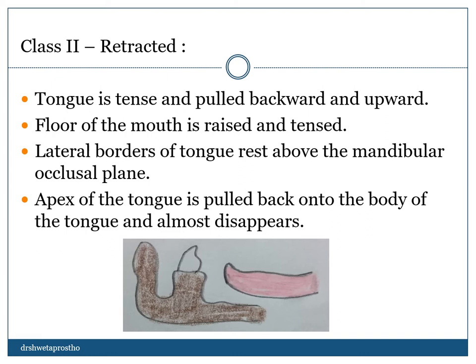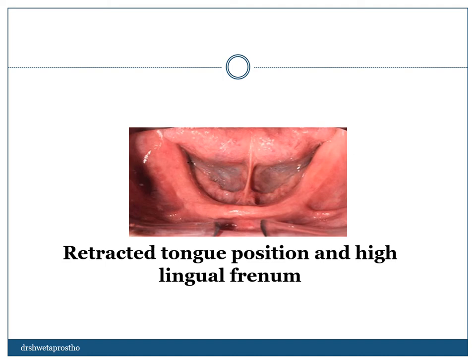Class 2 retracted tongue position most frequently breaks the lingual seal. The tongue is tensed, pulled backward and upward, dislodging the denture. The floor of the mouth is raised and tensed; the lateral borders rest above the mandibular occlusal plane; and the apex is pulled back into the body of the tongue, which almost disappears. This breaks the seal of the denture. We can make training grooves on the lingual side of the anterior lingual flange so that the patient can keep the tongue on those grooves.